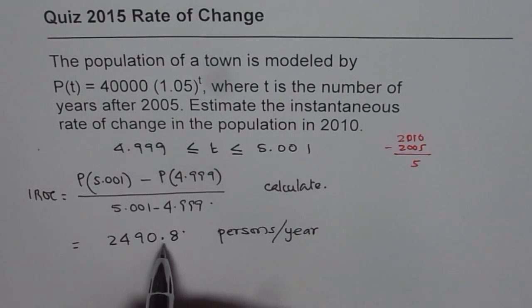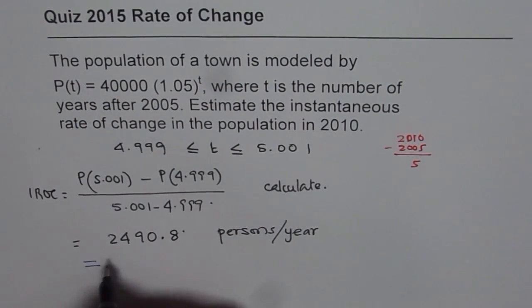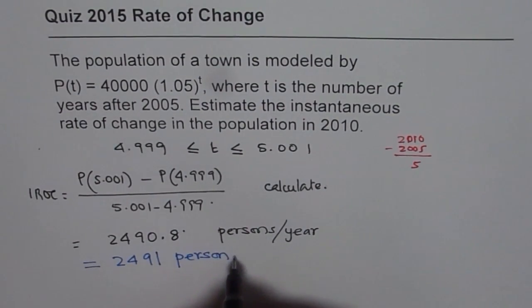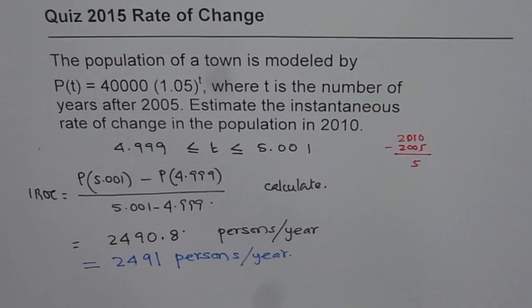And therefore, you should round it. And therefore, the correct answer which you should write in such a case should be equal to rounded, so it would make it 2491 persons per year. So that could cost you 0.5 marks. So avoid losing those marks. That's the whole idea of this particular video. I hope that helps.